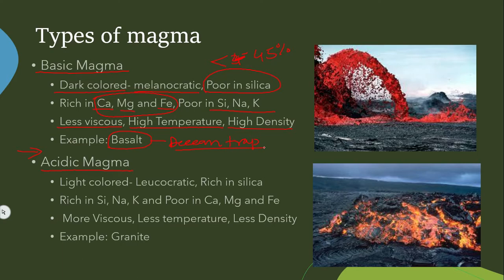Acidic magma is light in colour — because of that light colour it is called leucocratic. Dark colour magma is melanocratic and light colour magma is leucocratic. Acidic magma is rich in silica, sodium, and potassium, and poor in calcium, magnesium, and iron. Because it is rich in light-coloured elements, it has a light colour. It is more viscous because of high silica content, has less temperature around 900°C, and is less dense. Example: Granite.